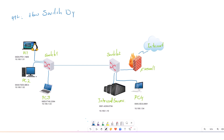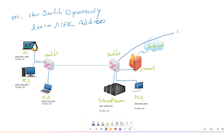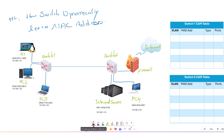Let's see practically how Layer 2 switches dynamically learn MAC addresses for all connected devices. Each switch has a table called the MAC address table, also known as the CAM table, which is used for storing the MAC addresses of all connected devices. Let's see the practical scenario — pretend PC1 would like to communicate with PC4.